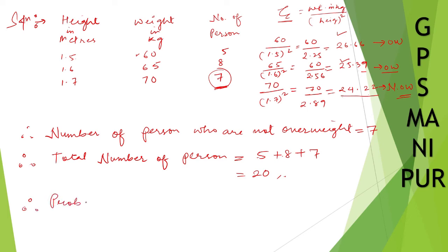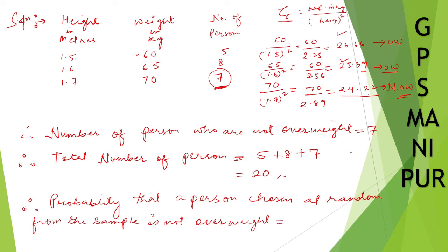So therefore, probability that a person chosen at random from the sample is not overweight, you can write down as you wish. Means provided it is correct. So probability that it is not overweight is number of person 7, divided by total number that is 20.